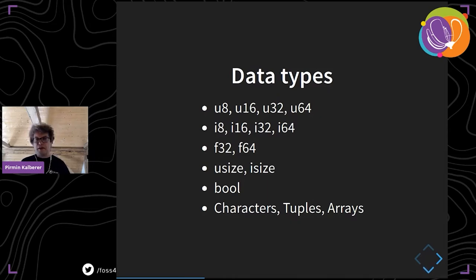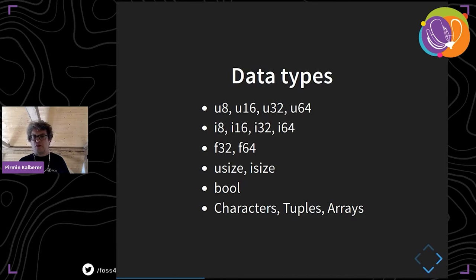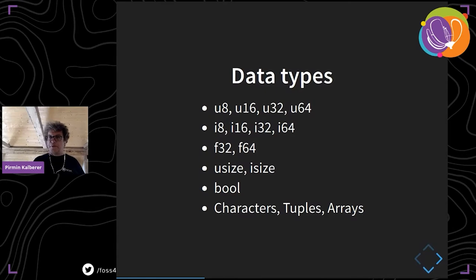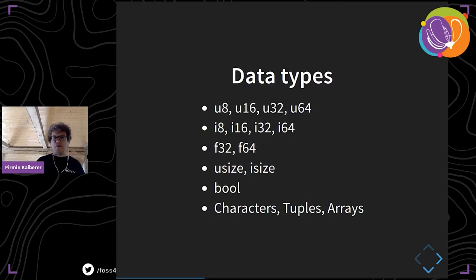The basic data types are scalar types: integers and floating point numbers, which have explicit bit lengths — unlike C where a long or int can have different lengths. There is also isize and usize, which are CPU-dependent. On a 32-bit system, isize is 32 bits long. These are used for integer indices. There are also Boolean types, tuples, characters, and arrays as basic compound types.